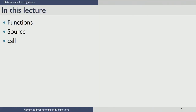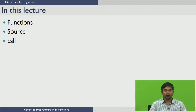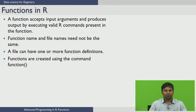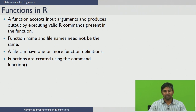Welcome to lecture 7 in the R module of the course Data Science for Engineers. In this lecture we are going to introduce you to functions in R, explain how to load or source the functions, and how to call or invoke them. Functions are useful when you want to perform a certain task many times. A function acts on the input arguments and produces the output by executing valid R commands inside the function.